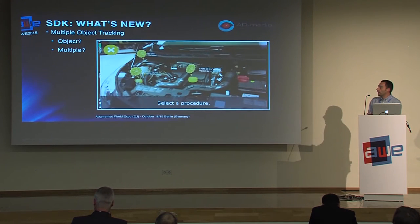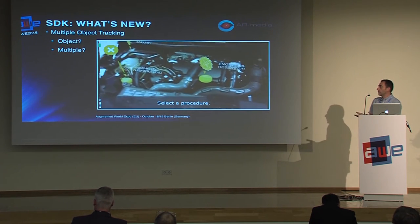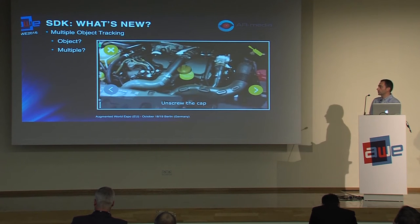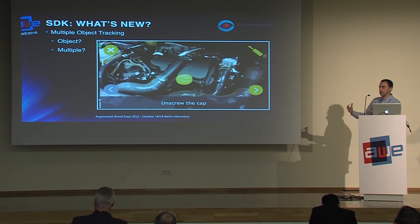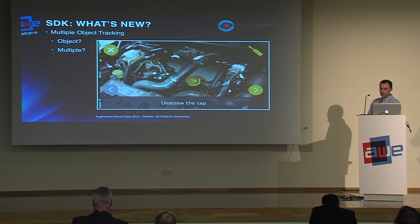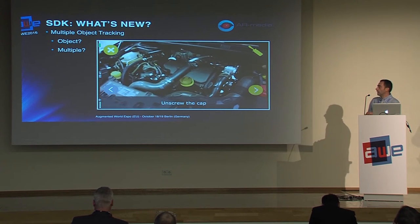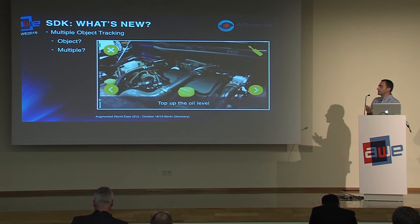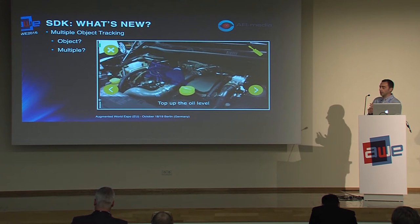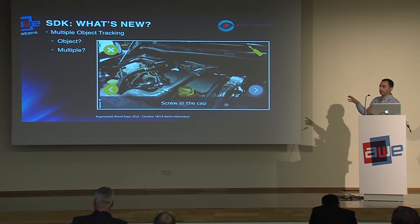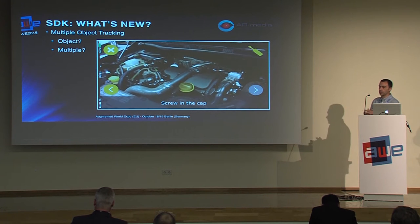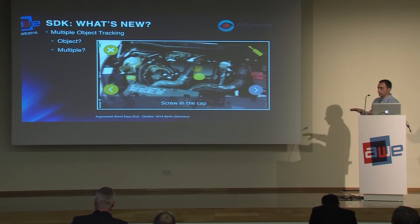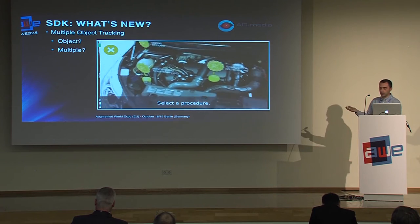Now let's go to the new features of the SDK. First of all, multiple object tracking. Object tracking is the recognition and tracking of three-dimensional structures — not a flat image or poster. Multiple object tracking means you can recognize and track more than one object of this kind, including completely different objects. You don't have to track different parts of the same object — it's entirely up to you.